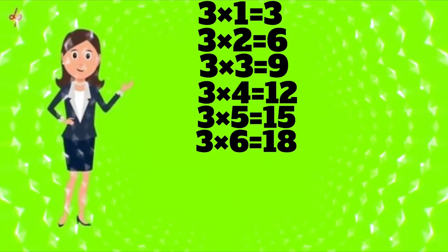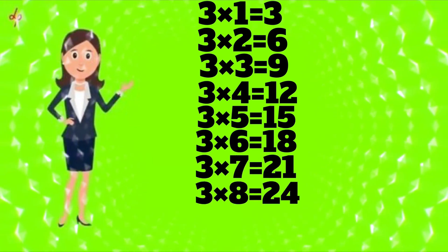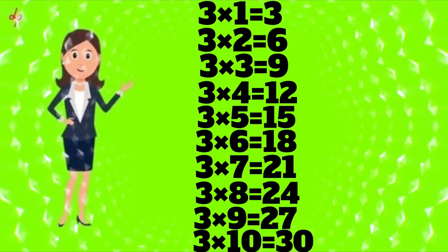Three six's a eighteen. Three seven's a twenty-one. Three eight's a twenty-four. Three nines a twenty-seven. Three ten's a thirty.